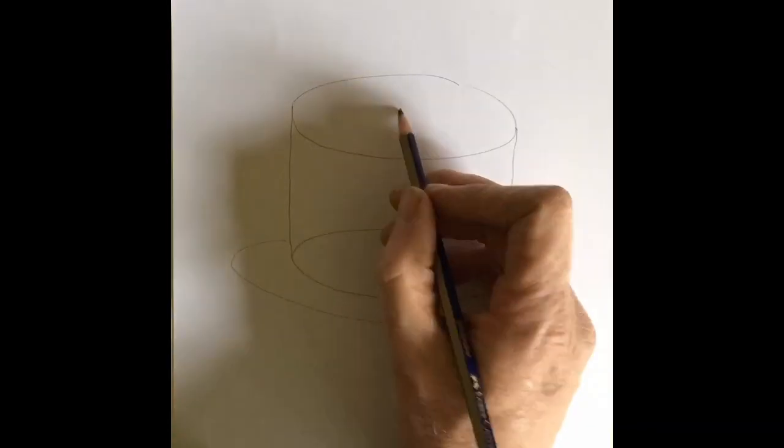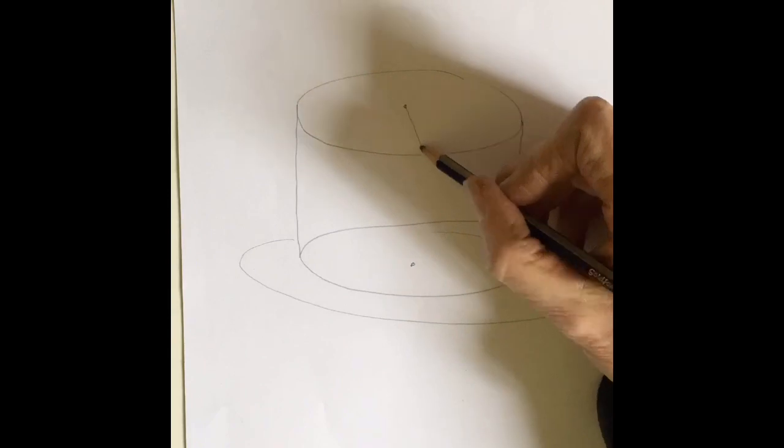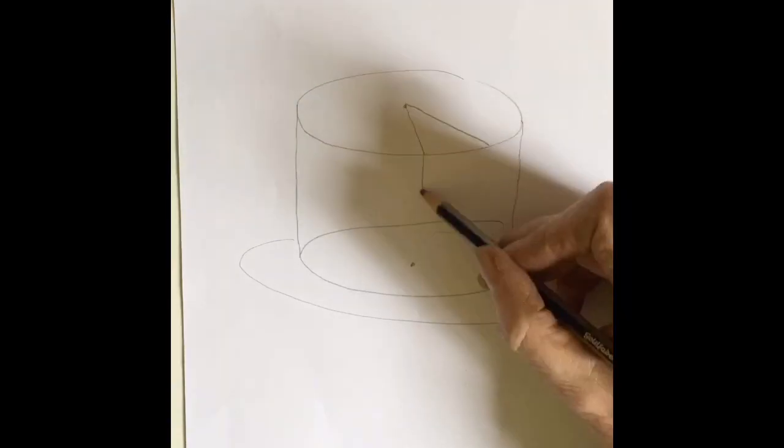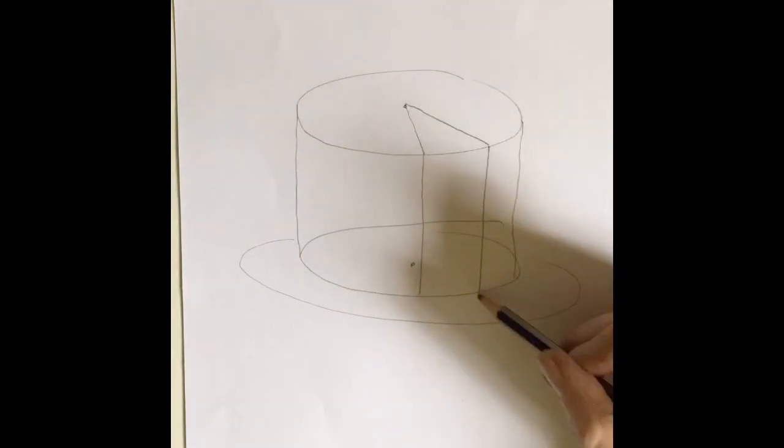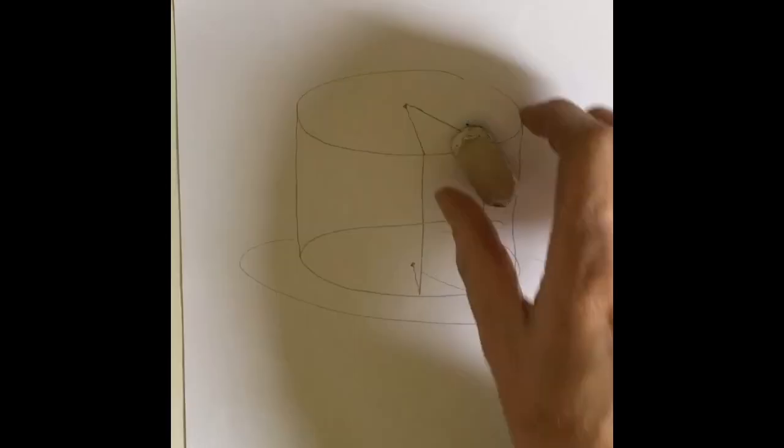And then we're going to do a bigger ellipse down the bottom. It's a plate. We're going to put a dot in the top ellipse and a dot in the bottom ellipse. And then we're going to do a V for a slice of cake coming out, and then we're going to join up those Vs so they look like it's made of glass.